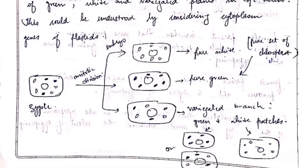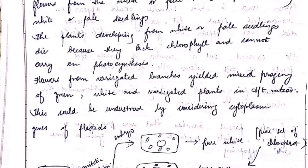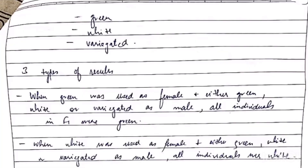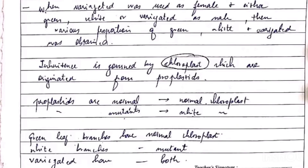Female plant branches that were pure green or pure white produced correspondingly colored offspring, while variegated female branches could produce all three types of offspring. Over many cell divisions, some cells ended up with a pure green set of normal chloroplasts making green patches, others with non-functional chloroplasts making white patches, and others with a mix producing variegated offspring. This type of inheritance is governed by the chloroplast, confirming Mirabilis jalapa as an example of chloroplast inheritance.